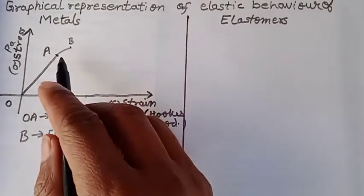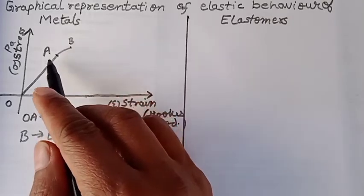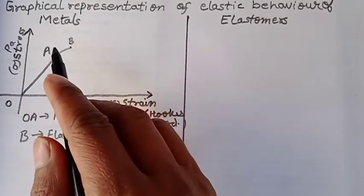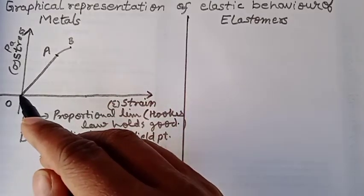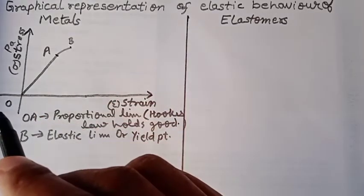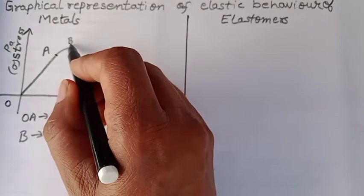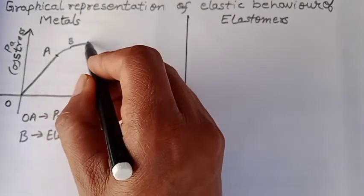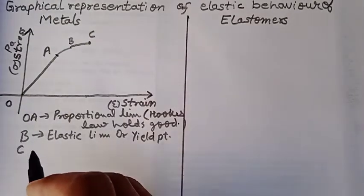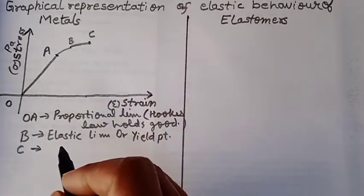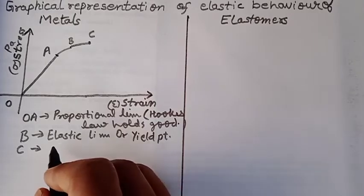Now there is some more deformity but it is reversible. When we remove deforming force, stress decreases and it again returns to O. But if we further increase, there comes another point C. C doesn't have a particular name but we will call it permanent set point.